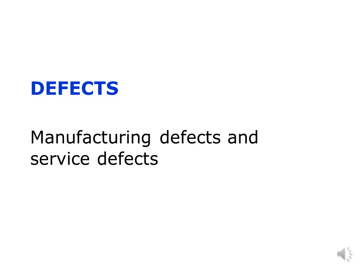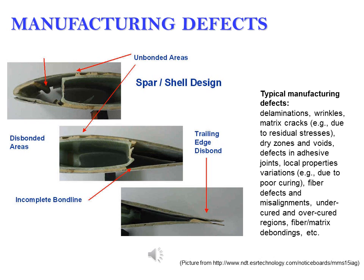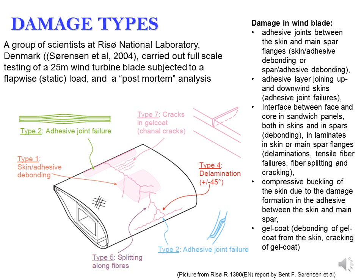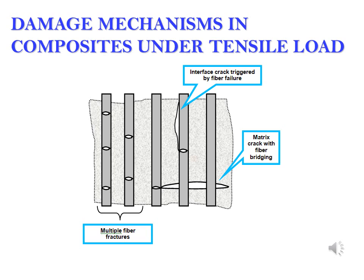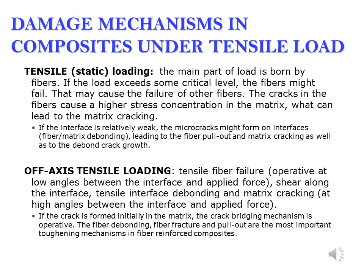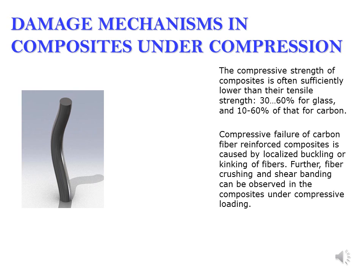Service properties and lifetime of wind blades depend to a large degree on the presence of manufacturing defects. Typical manufacturing defects include delaminations, wrinkles, matrix cracks, dry zones and voids, defects in adhesive joints, local property variations, fiber defects and misalignments, under-cured and over-cured regions, and fiber-matrix debonding. The degradation of blades under loading is determined by microscale cracking, debonding, and deformation. The main mechanisms are fiber cracking, matrix failure, and interphase debonding. The load is borne mainly by fibers; if the load exceeds a critical level, fibers might fail, causing failure of other fibers. Cracks in fibers cause higher stress concentration in the matrix, which can lead to matrix cracking. Compressive strength of composites is often sufficiently lower than their tensile strength.